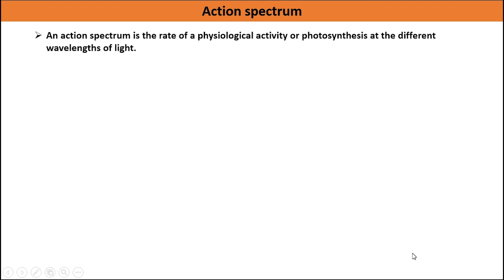Action spectrum. An action spectrum is the rate of a physiological activity or photosynthesis at the different wavelengths of light. Chlorophyll A absorbs blue and red region of light and it becomes excited and can lose its electron. It receives electrons by oxidation of water molecules. In this event, oxygen is released.